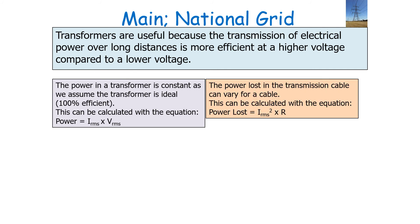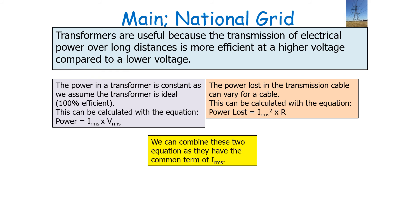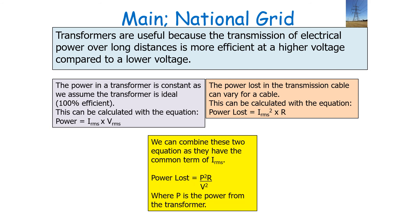The power lost in the transmission cable can vary, and we calculate this with the equation: power lost equals I_RMS squared times R. We can combine these two equations because they share a common term of I_RMS. So we can say that power lost in the cable equals P²R over V², where P is the power from the transformer.